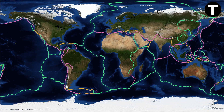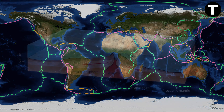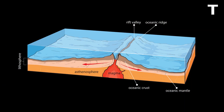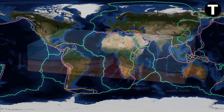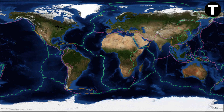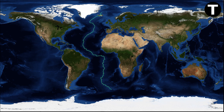Let's begin with divergent plate boundaries, represented in green on the map. These are zones where tectonic plates are moving away from each other, creating space for new crust to form. One iconic example is the Mid-Atlantic Ridge, which stretches through the Atlantic Ocean. Along this ridge, molten rock rises from the mantle, solidifies, and gradually pushes the continents apart.